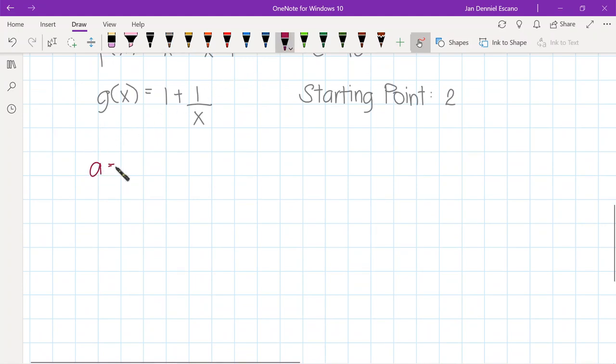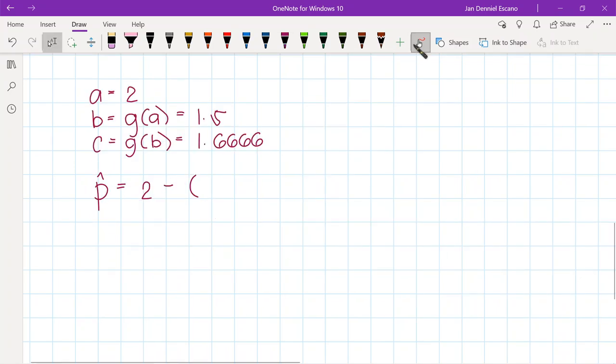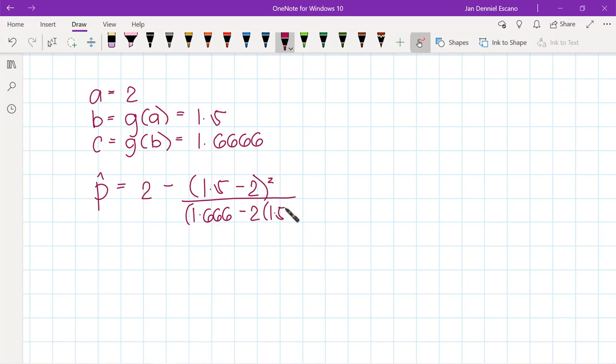Using Steffensen's method, we have a as 2, b is just g of a, so that is 1.5, and c which is equal to g of b will give us 1.6666. And if we compute for the value of p hat, that is just 2 minus (1.5 minus 2) squared all over (1.666 minus 2 times 1.5 plus 2), and we get p hat as 1.625.